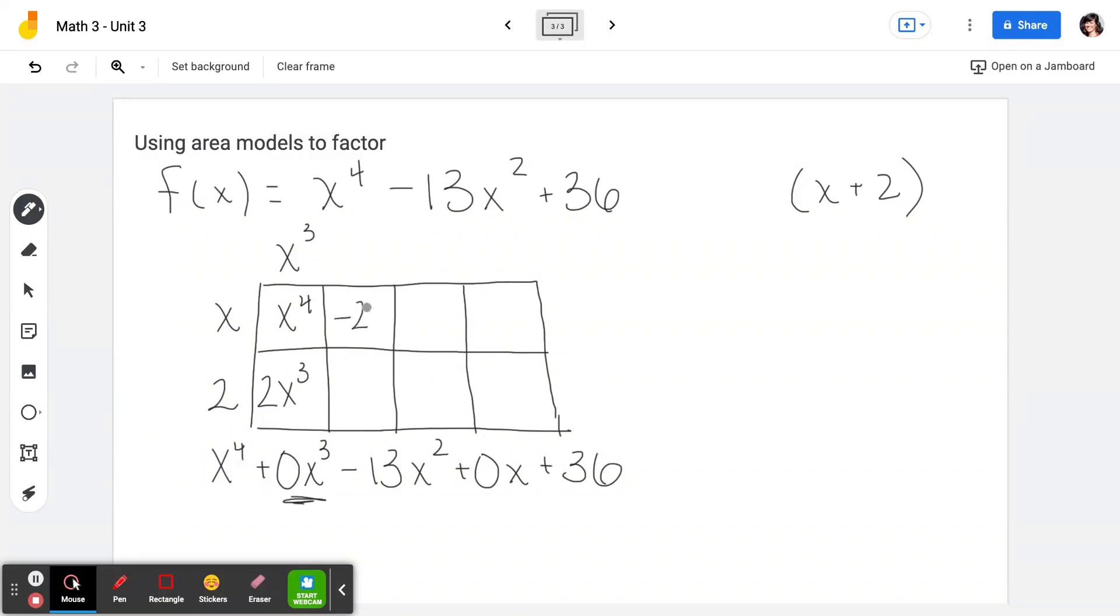This is why it was important that we put 0x cubed here. So now we know that this term must be negative 2x cubed, since these two terms have to add up to what's right here, and what's right here is 0. So we put that here so we don't start looking over here at the 13 too early. We're still looking here at the x cubed. We want to make sure we don't skip any terms.